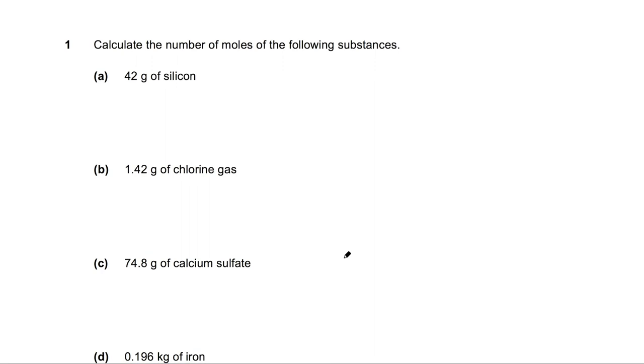Now let's look at some other examples. Calculate the number of moles of the following substances. So again, we have the formula number of moles is the mass over the molar mass. So number of moles of silicon is equal to the mass, 42 grams. And the AR of silicon is 28. So that will give us 1.5 mole.